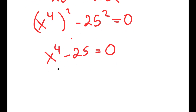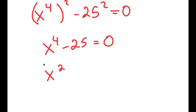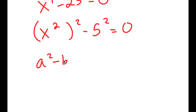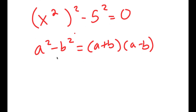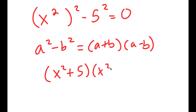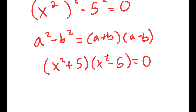Now from here, I'm going to rewrite this as x squared to the power of 2 minus 5 squared is equal to 0. So now I can use the formula a squared minus b squared is equal to a plus b times a minus b on this. So this turns into x squared plus 5 times x squared minus 5 is equal to 0.